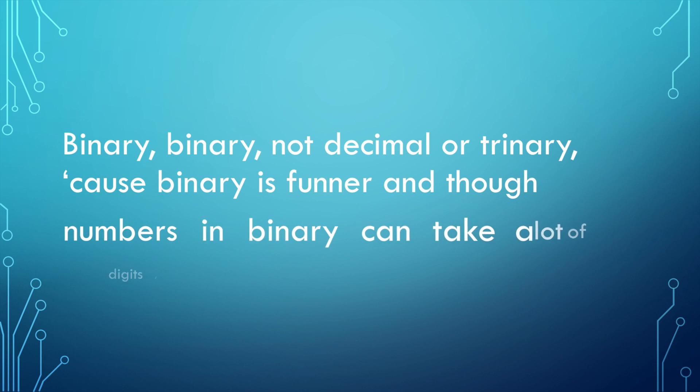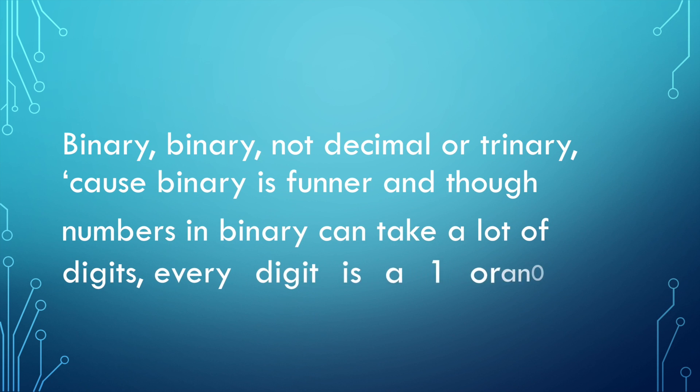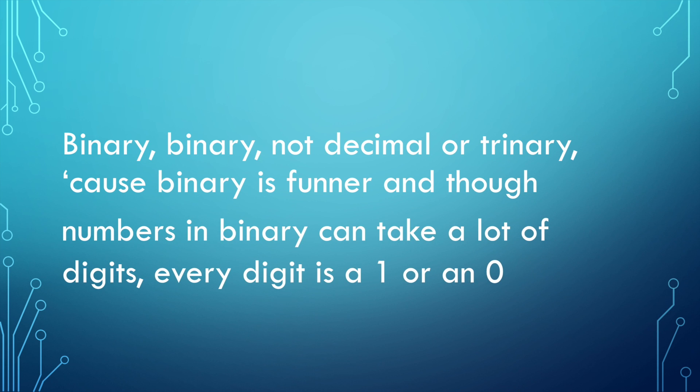Numbers in binary can take a lot of digits. Every digit is a one or a zero.